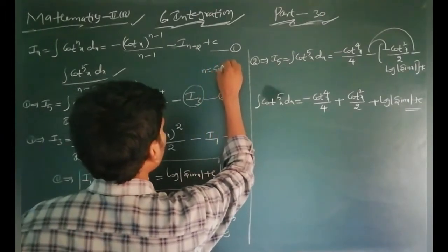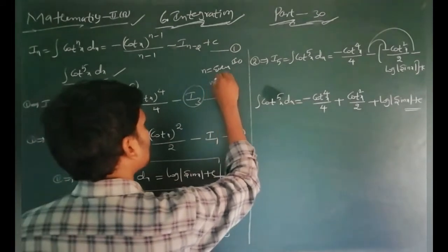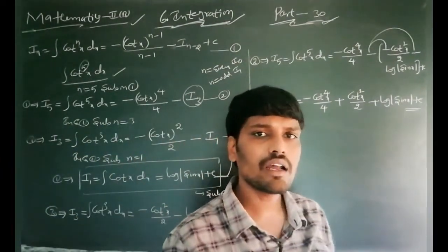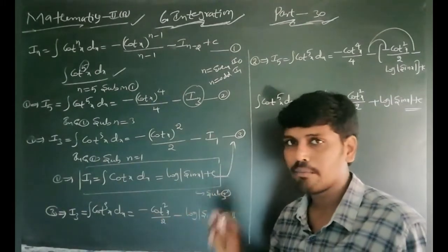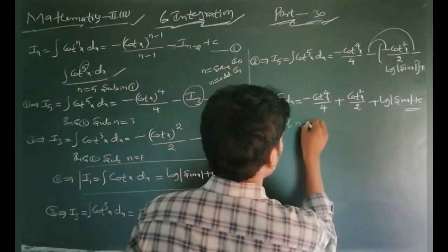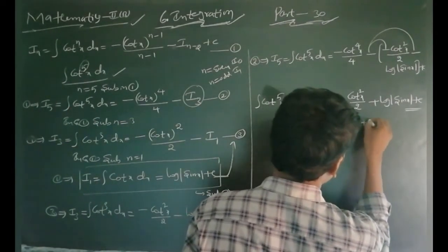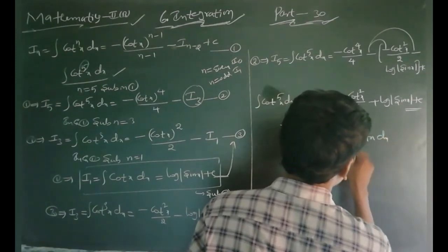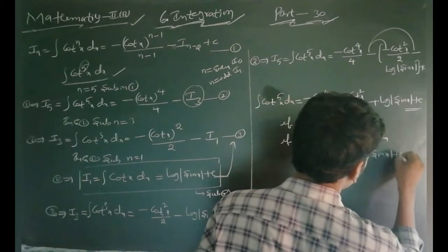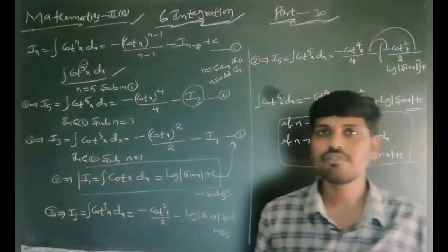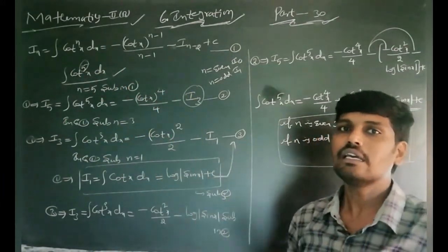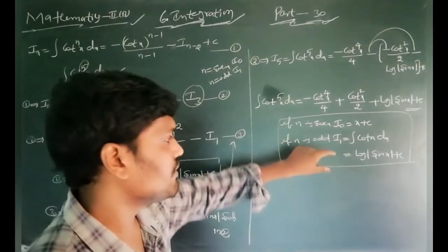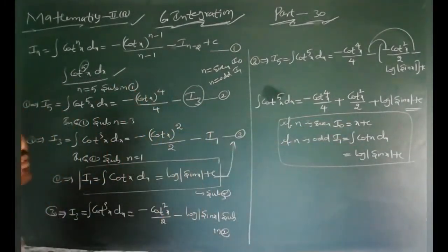Note: if n is even, the last term is I_0; if n is odd, the last term is I_1. Here cot^5 has n equals 5, which is odd, so we stop at I_1. I_1 equals log|sin x| plus c. If n is even, I_0 equals x plus c. These two terminal values are used when applying the reduction formula of cot^n x dx to solve problems.